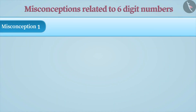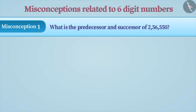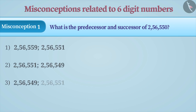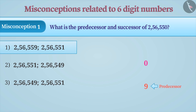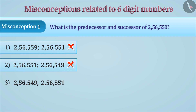Misconception 1: What are the predecessor and successor numbers of 256,550? Many a times, number 9 is assumed to be the predecessor of 0 and therefore option A may be chosen as the correct answer. Similarly, number names can be confusing and option 2 is chosen. But they are both wrong answers.